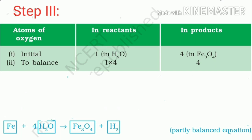It must be remembered that we cannot alter the formula of the compound or element involved in the reaction. For example, to balance Oxygen atoms, we can put coefficient 4 as 4H2O, but we cannot make any change in the formula of water — it will always be H2O. Now the partially balanced equation becomes: Fe + 4H2O → Fe3O4 + H2.